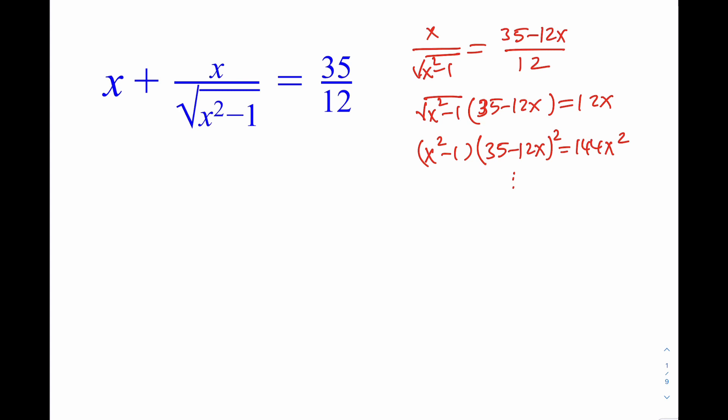Without further ado, what is a reasonable substitution? Since we have x squared minus 1, we're going to replace x with secant alpha — alpha is just any angle, though it won't be just any angle because we have restrictions. Notice that x squared minus 1 must be greater than 0, so x squared must be greater than 1, meaning x is greater than 1 or less than negative 1. But x cannot be negative because the radical is positive, so combined with x greater than 0, we get that x must be greater than 1.